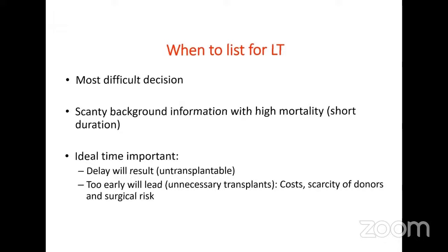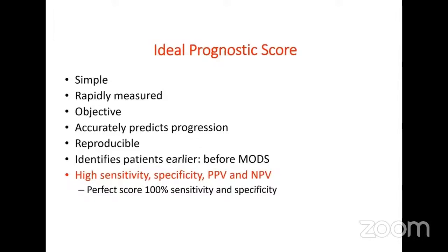Delay in listing results in untransplantable situations with onset of septic shock, while too-early decision results in unnecessary transplant with high cost, donor risk, and surgical risk. The ideal prognostic score should be simple, rapidly measurable, accurately predict progression, reproducible, and identify patients before onset of multi-organ dysfunction. It should have high sensitivity and specificity with high positive and negative predictive value. No current score achieves 100 percent sensitivity and specificity.